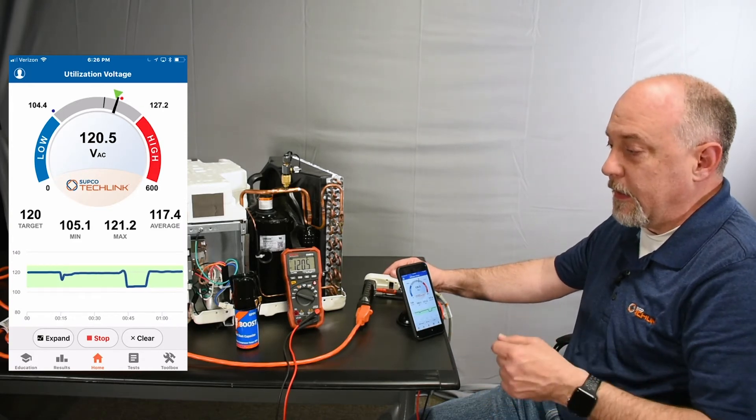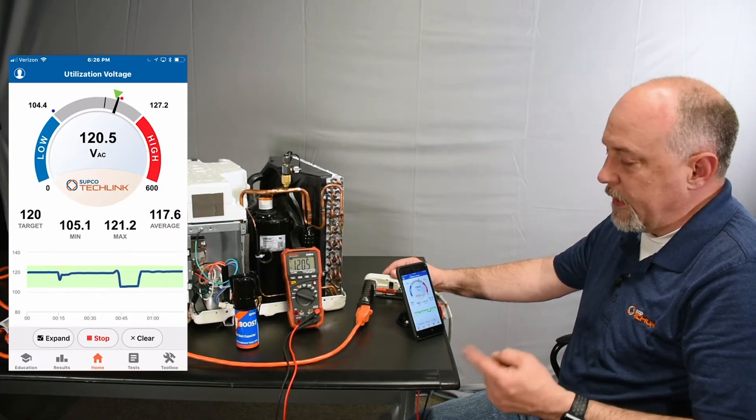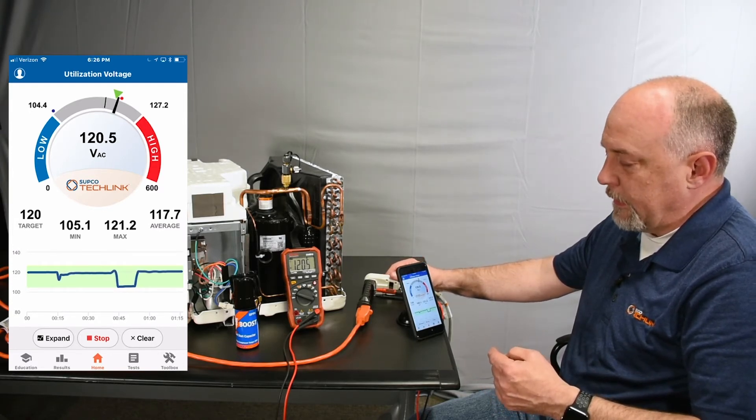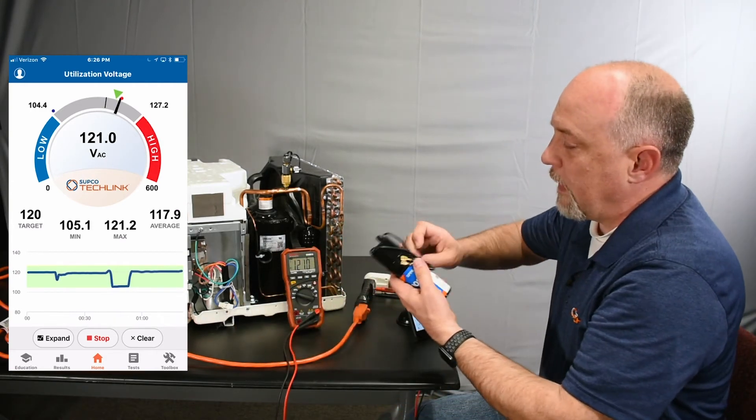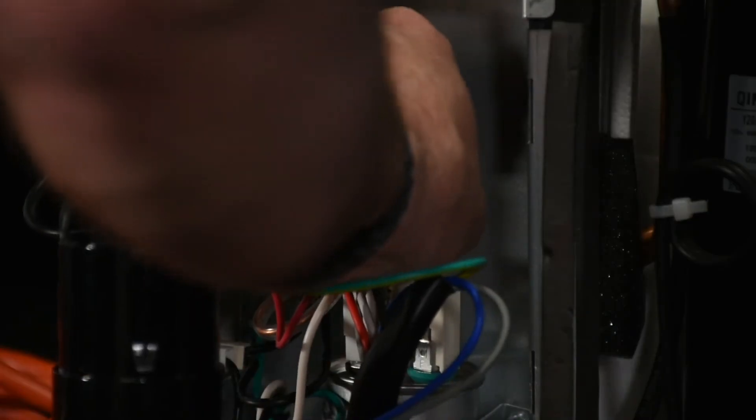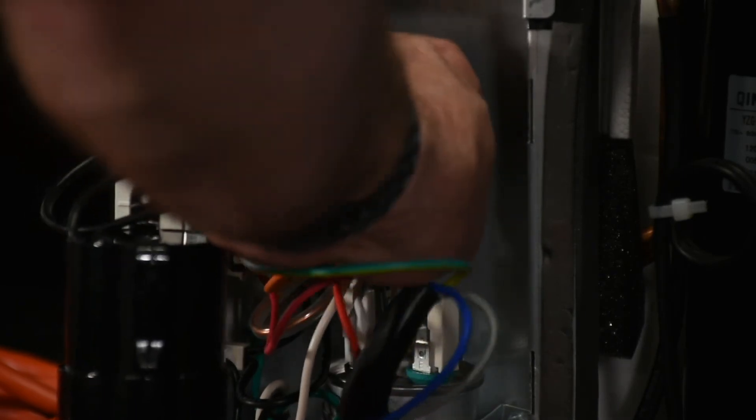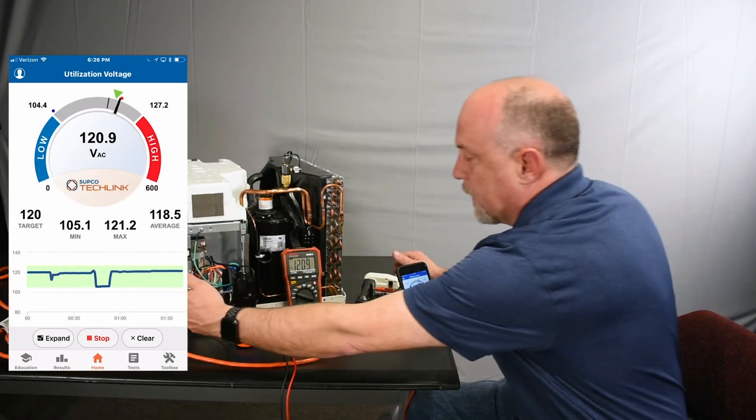I'm going to kill the power and install an original Supco Superboost. We're going to show you the difference in startup. I'll trip the power and take just a second here. We'll install this start device across the common terminal and across the hermetic terminal of the capacitor. It hasn't had a lot of time to equalize.